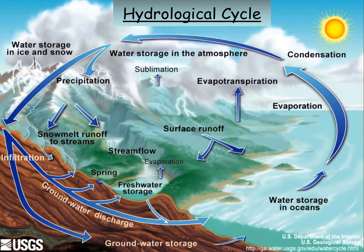The model itself uses the idea of inputs, stores, outputs and flows. You shouldn't really need to go through what inputs and outputs are — they're fairly obvious. Inputs of precipitation, outputs of discharge, and this exchange of evaporation and evapotranspiration. So they should be fairly self-explanatory.